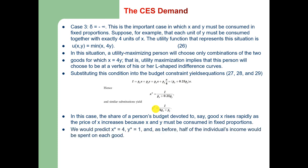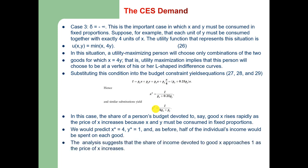Substituting x = 4y into the budget constraint yields equations 27, 28, and 29 for the demand functions. The share of the budget devoted to good x rises as the price of x increases because x and y must be consumed in fixed proportions. We predict x* = 4, y* = 1, and half of income is spent on each good. The share of income devoted to x approaches 1 as p_x increases.